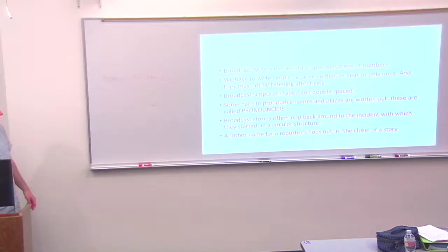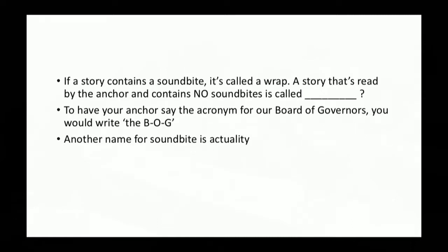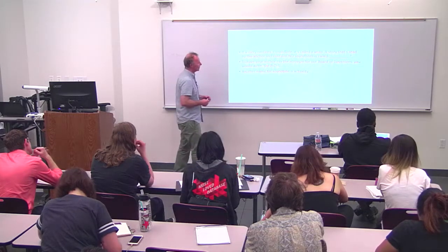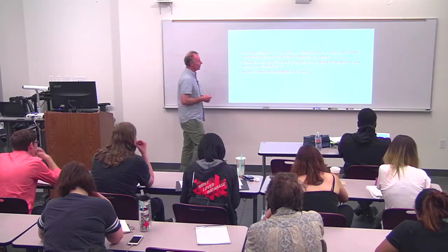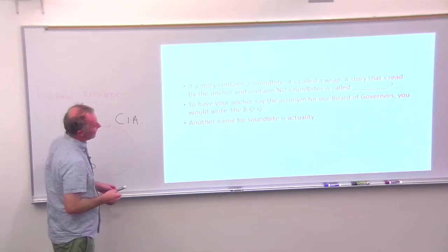Another name for a reporter's lockout is the 'close' of a story. The lockout is what the reporter does at the end when they say, 'This is Cecil for KCSF.' You could also call that the close. If a story contains a soundbite, it's called a wrap. A story read by the anchor that contains no soundbites is called a reader. Soundbites are also called actualities. To have your anchor say an acronym like BOG, write it as B-O-G separated with hyphens. If they're going to say C-I-A, write it as C-I-A.